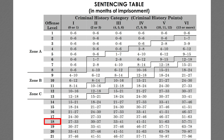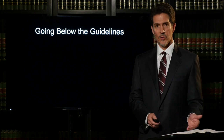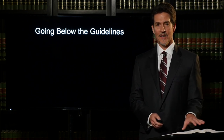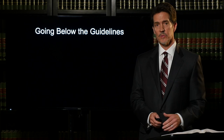To find the guideline sentencing range, you calculate the criminal history category based on prior convictions. Let's assume this defendant has no convictions at all — zero criminal history points — so they're in category one. You come down category one to total offense level 18, look to the right, and you'll see an advisory sentencing guideline range of 27 to 33 months in custody. But remember, the guidelines are now advisory and not mandatory, so you don't want to stop with just calculating the guidelines.